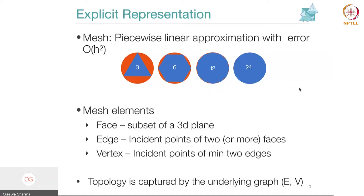We are free to use any polygon, so we can increase the number of sides to six, and then we see if this hexagon better represents the circle. Yes, to some extent it is a better representation, but we could probably do better if we increase the sides to 12 — and with 12 you still see a little bit of error.